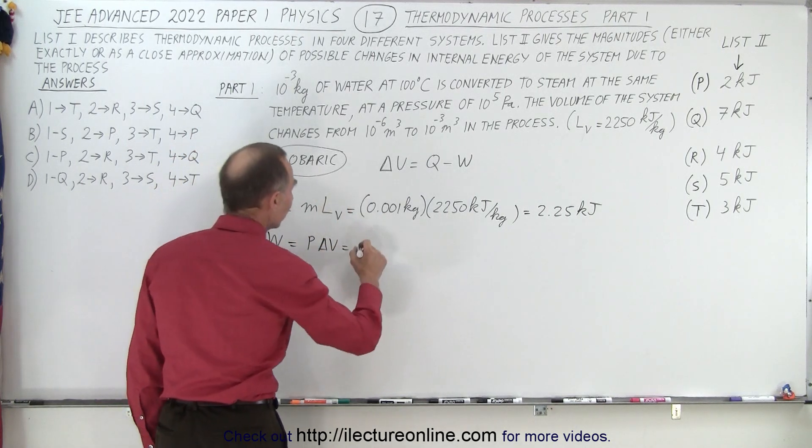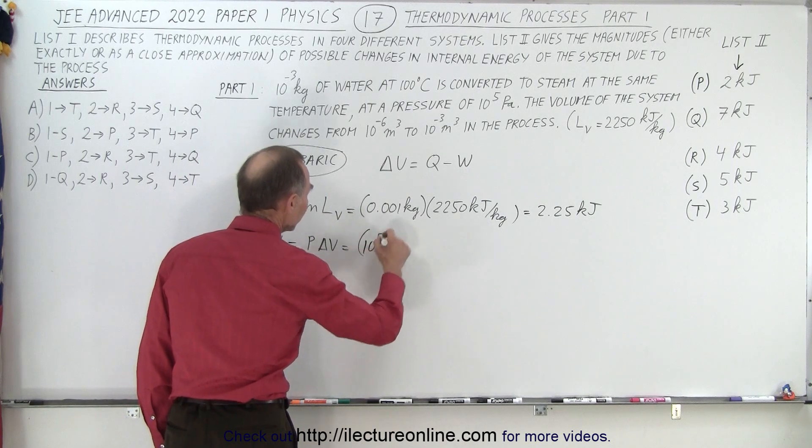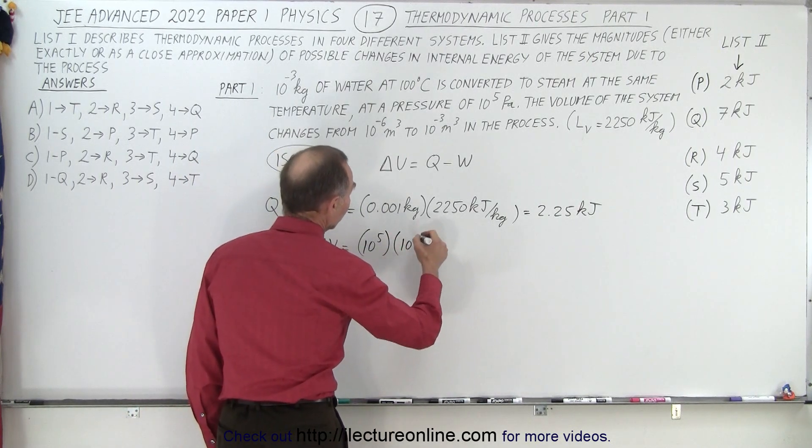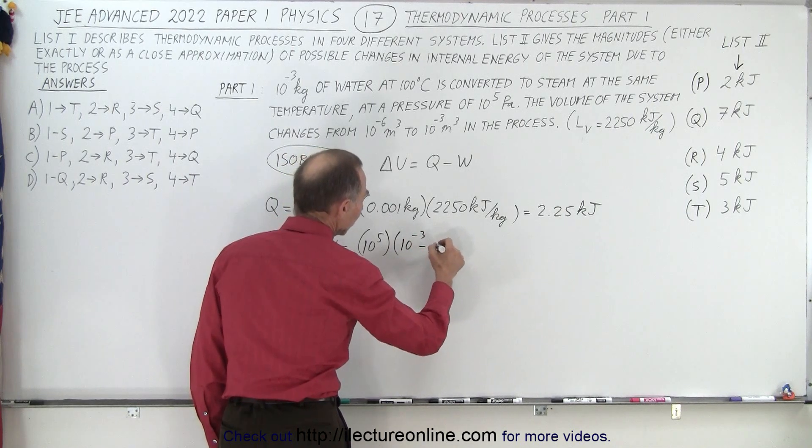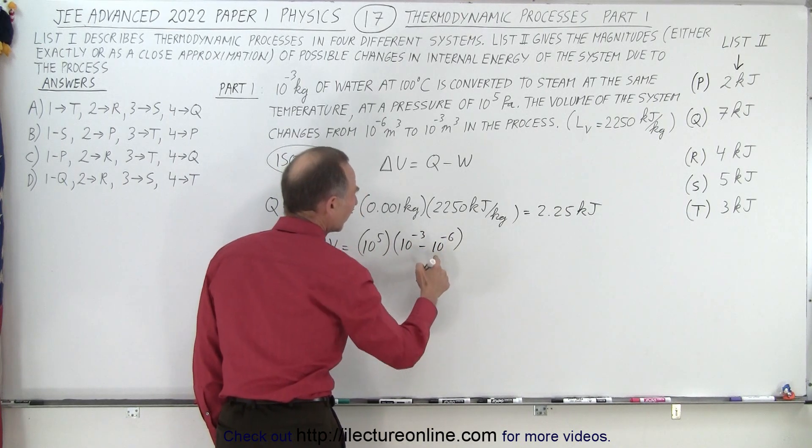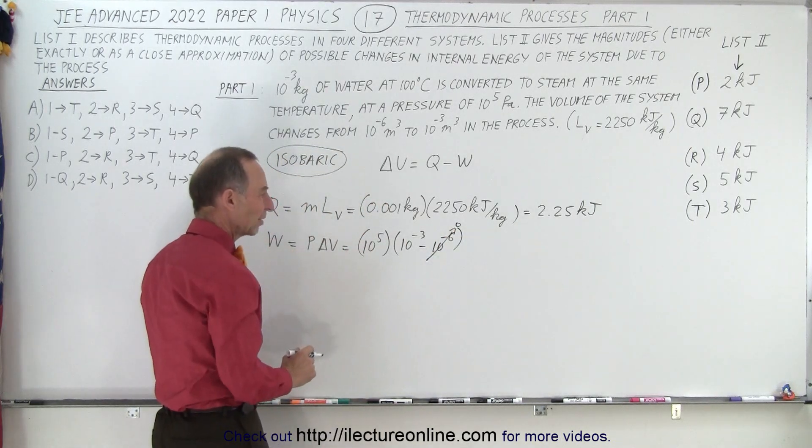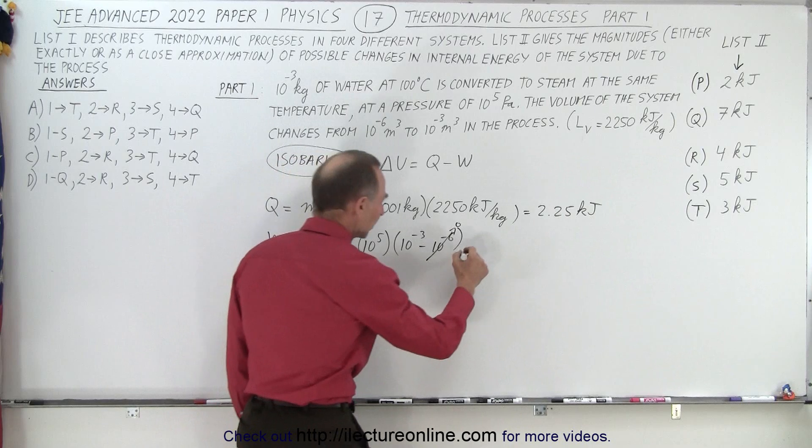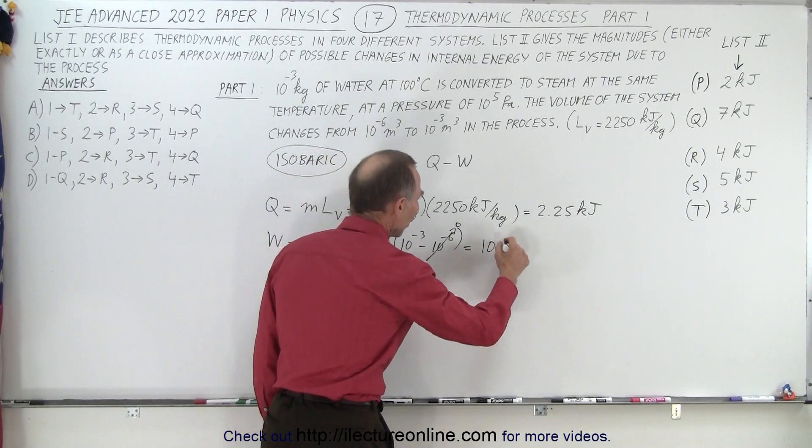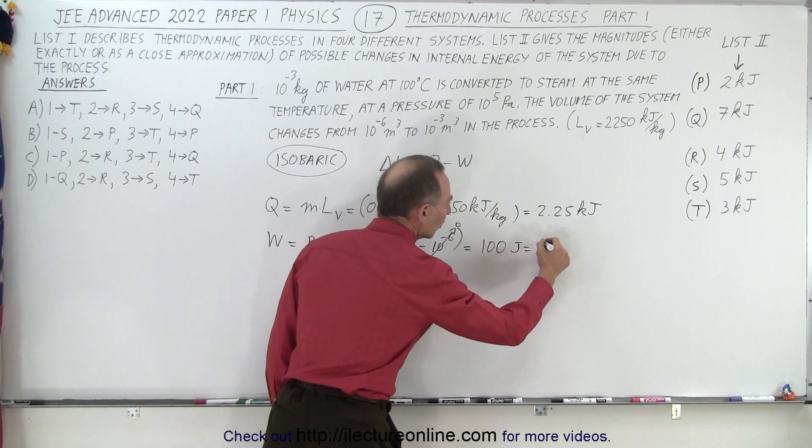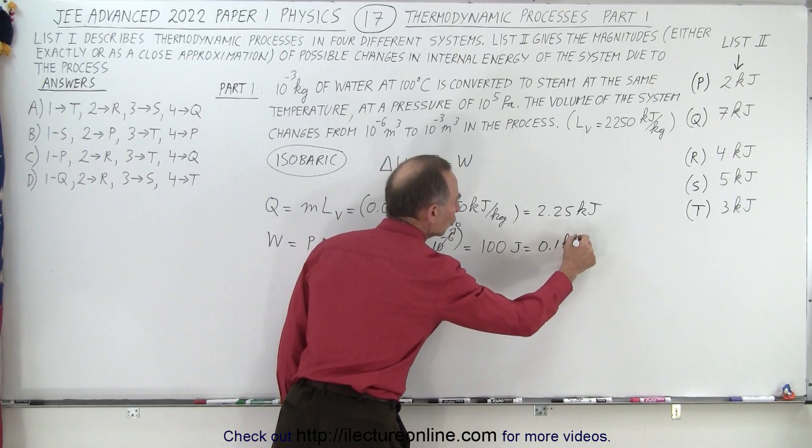In this case, the pressure is 10^5 Pascals, and the change in volume would be from 10^-6 to 10^-3. But 10^-6 is so small, you can essentially say that's zero. So the change is 10^-3 multiplied by this, which equals 100 joules, or 0.1 kilojoules.